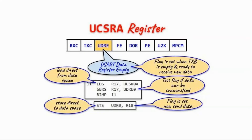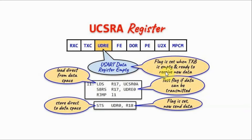The USART has three control and status registers: A, B, and C. Register A is a status register containing eight flag bits indicating the status of the USART. We focus on the USART data register empty flag — when this flag is set, it means the TXB register is empty and ready to receive new data.